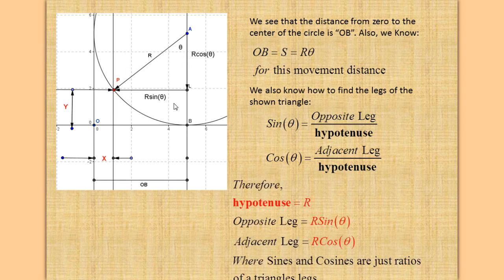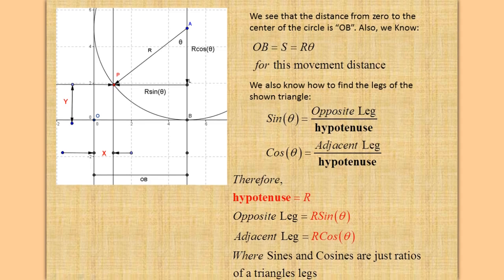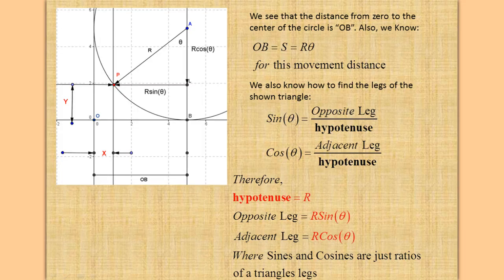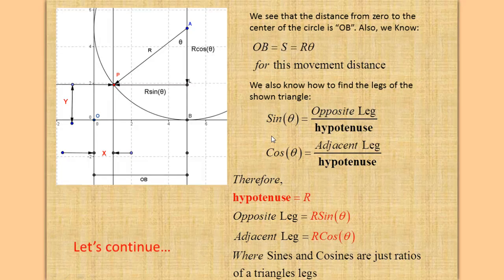We know sine θ equals the opposite leg over the hypotenuse, and cosine θ equals the adjacent leg over the hypotenuse. Therefore, the hypotenuse is r. So the opposite leg equals r times sine θ, and the adjacent leg equals r times cosine θ, where sines and cosines are just ratios.